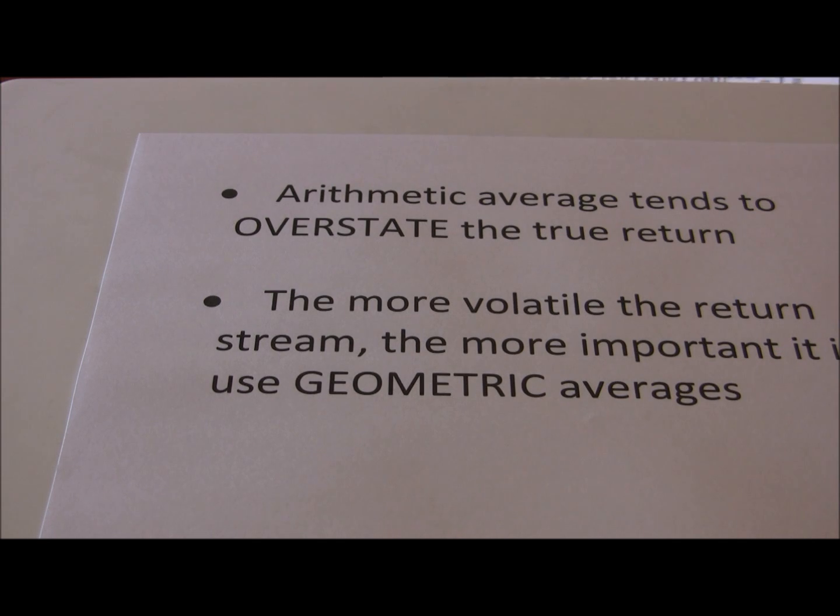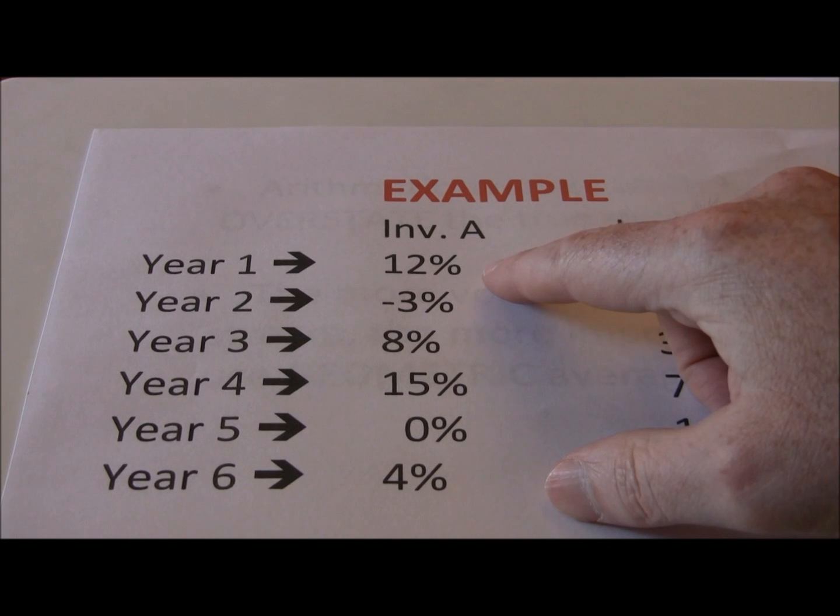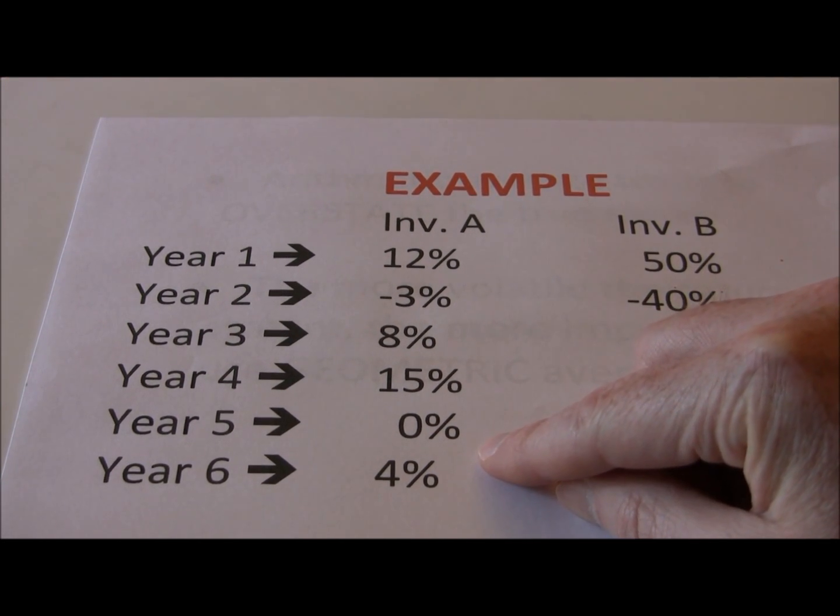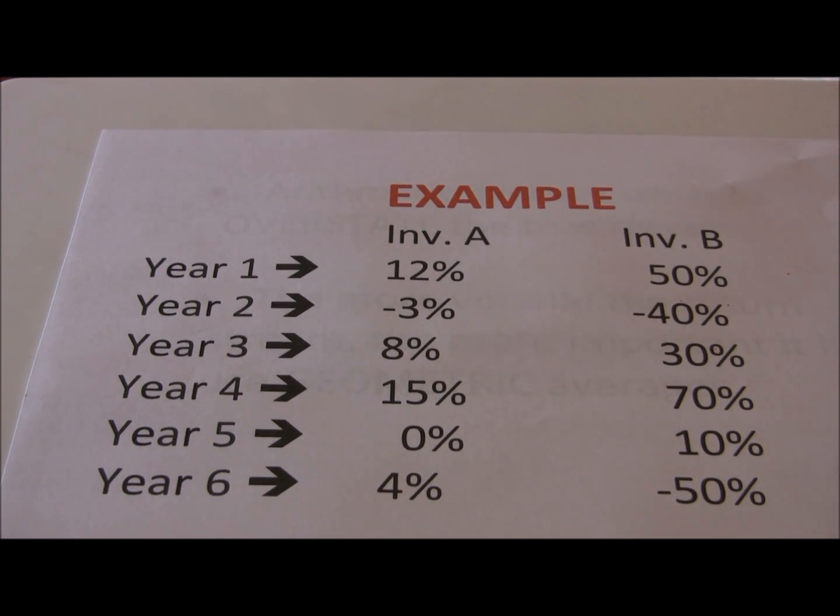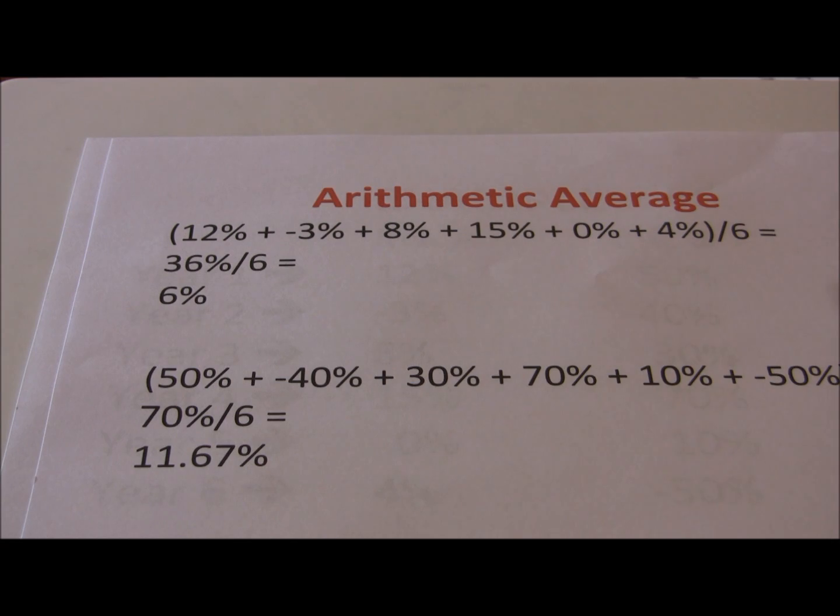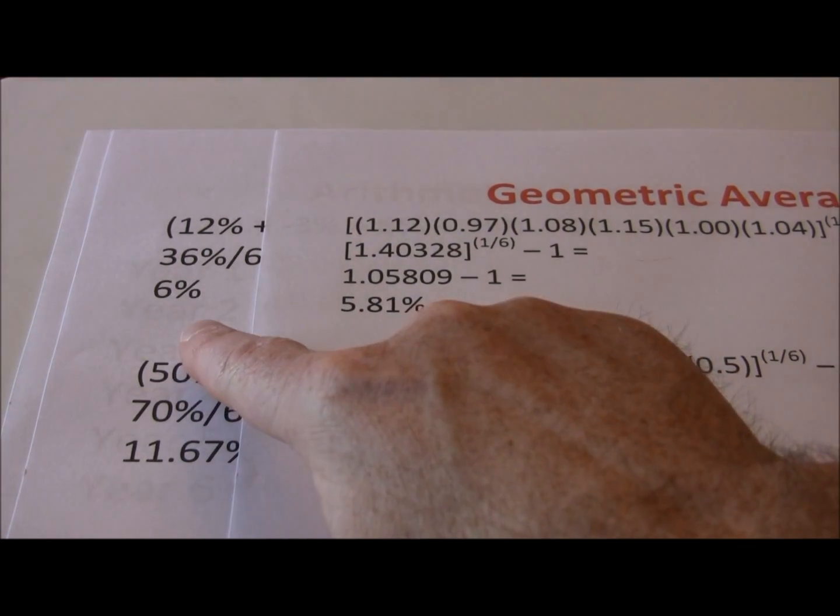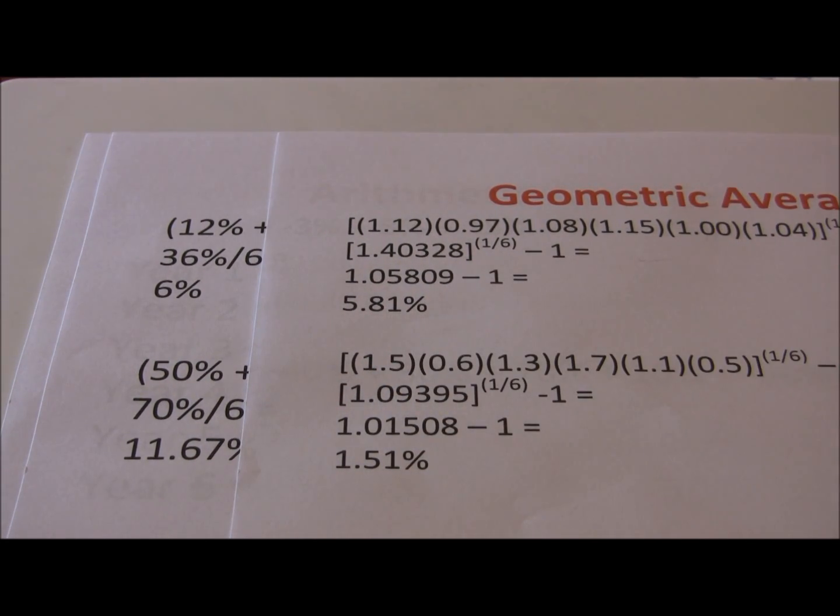Return stream 1, in our example, was relatively stable. Our arithmetic average for investment A was 6%, our geometric average for the same investment was 5.81%. Notice there's very little difference between the arithmetic and geometric average for investment A.